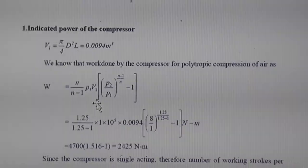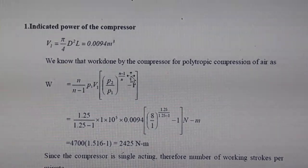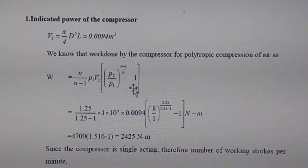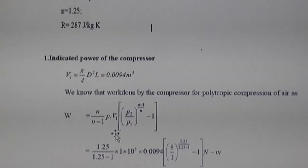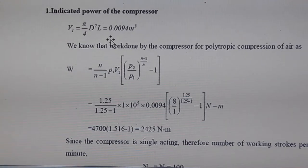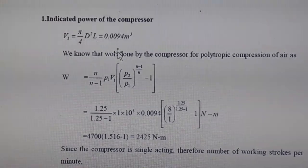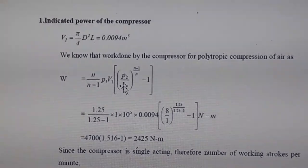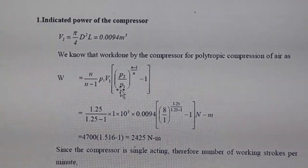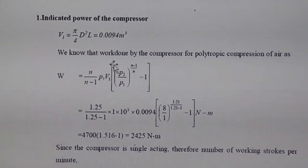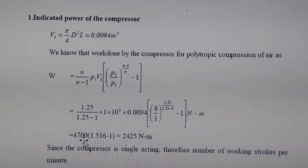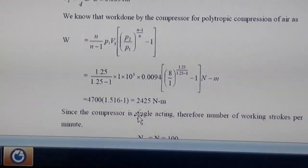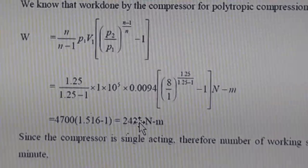We use the relation for indicated work: W = [n/(n−1)] × p1 × V1 × [(p2/p1)^((n−1)/n) − 1]. With n = 1.25, p1 = 1×10⁵, V1 = 0.0094, p2 = 8×10⁵, the indicated work is 2425 N·m.